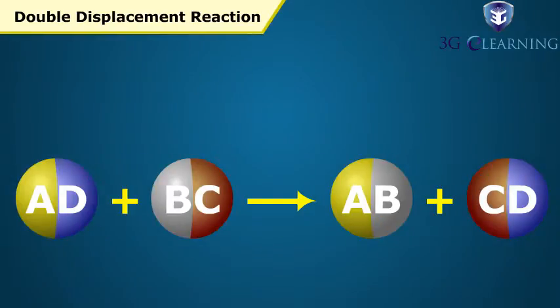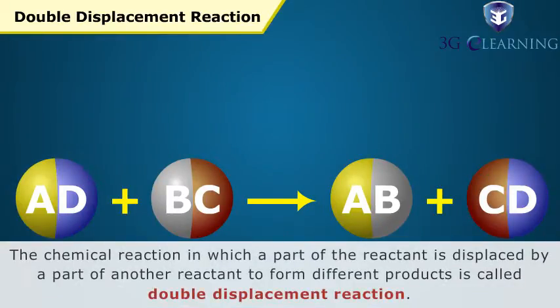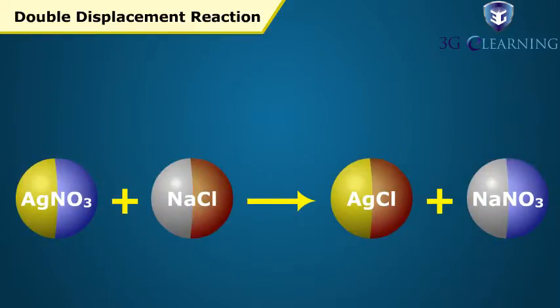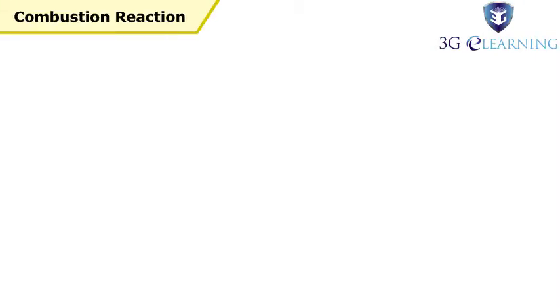Double Displacement Reaction: AD plus BC equals AB plus CD. For example, the precipitation reaction of silver nitrate and sodium chloride is a double displacement reaction that results in the formation of silver chloride and sodium nitrate.